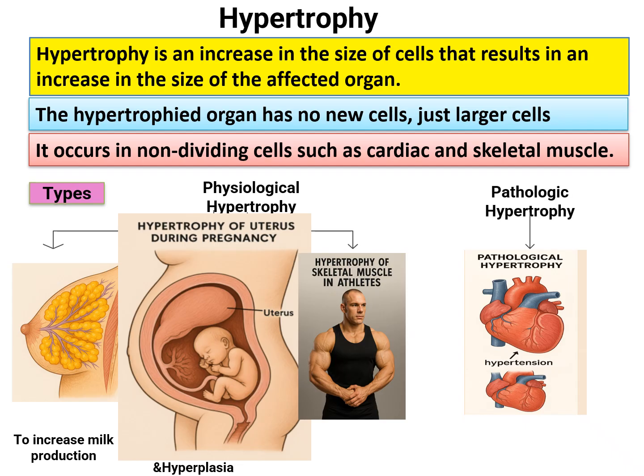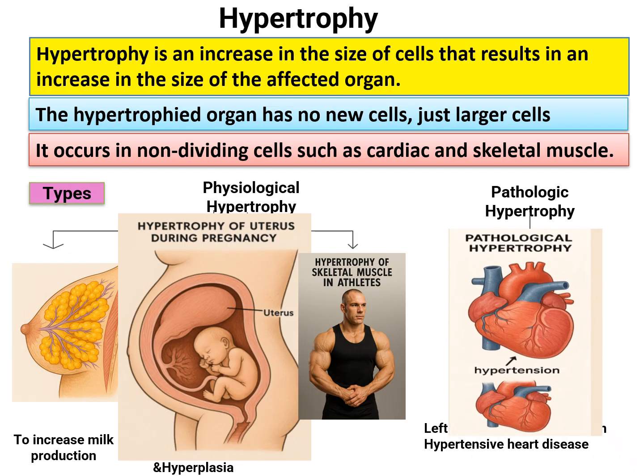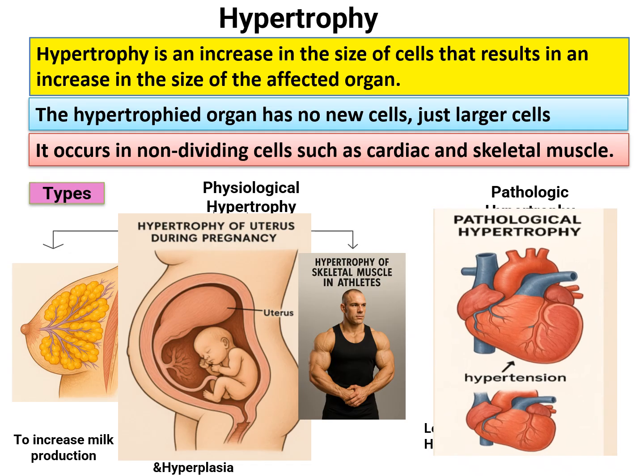Coming to pathological hypertrophy — the name itself indicates some pathology is present. Here the pathology is hypertension. When there is systemic hypertension, the left ventricle has to pump blood with increased pressure. That is why there is left ventricular hypertrophy in hypertensive heart disease.